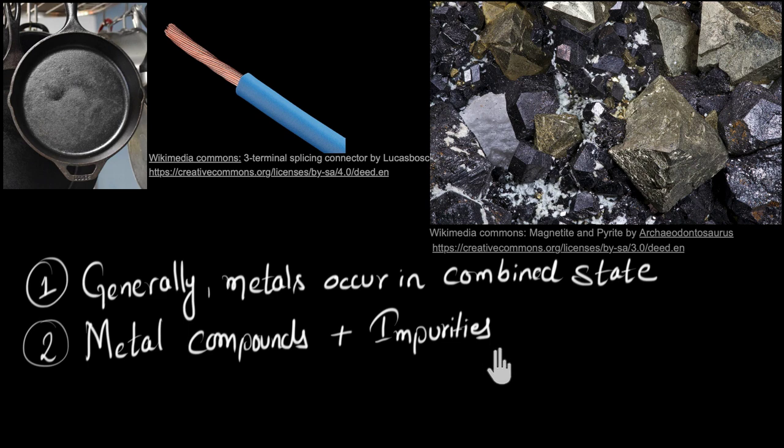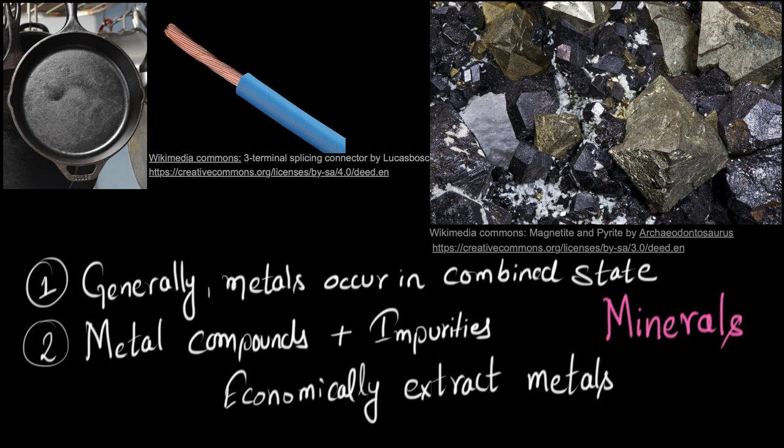So the first step would be to start with a rock that has more metal compounds, or it takes us less money or less energy to separate the metal compounds and impurities. I would not want to start with a rock that has less amount of metal compound, or it takes us more money and more time to separate these two out. The bottom line is that naturally, most metals occur as metal compounds in the rocks. These are called minerals. But only from specific minerals, we can profitably extract metal compounds. These minerals are called ores.